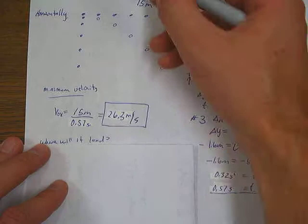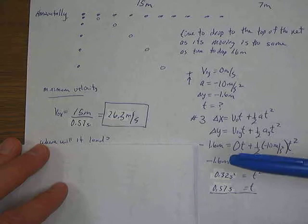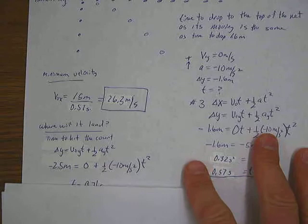So if I hit it at that minimum speed, then the question is where will it land? Well now if it's landing, it's actually hitting the ground, so it's falling all the way down. Which means I now need to find the time it takes to go all the way to the ground, not just to the top of the net.